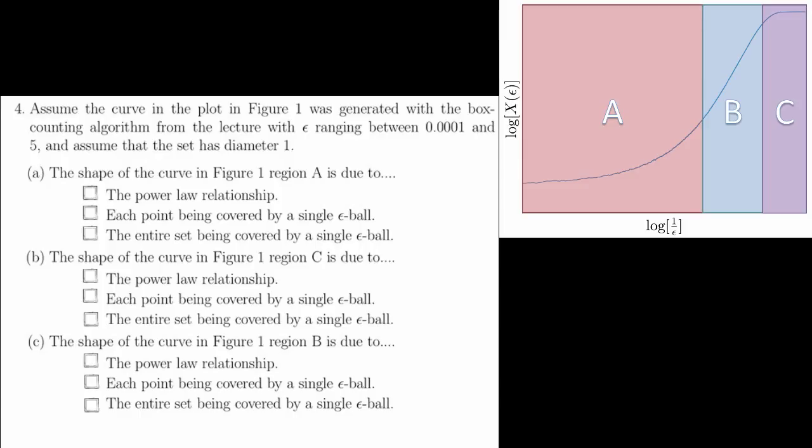For question four, we want to delve into what is causing the three different regions in this figure. Region B is the scaling region, and the shape of this part of the curve is due to the power law relationship. This is the actual region we care about on this plot. Regions A and C are numerical side effects of the algorithm. Region A is being caused by epsilon being too large. In this case, the entire set is being covered by a single epsilon ball.